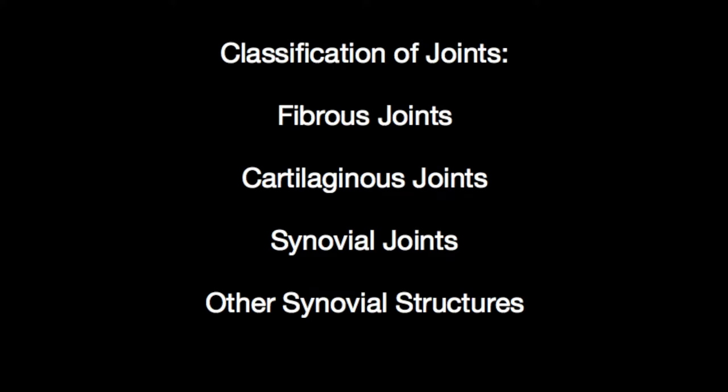Articulations are the unions between bones, also known as joints. These joints are classified using the following criteria: location, degree or direction of movement, and whether or not it is made up of fibrous tissue or cartilage.